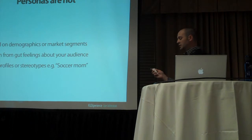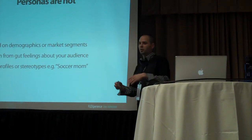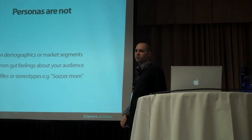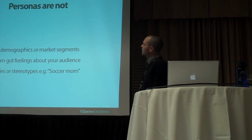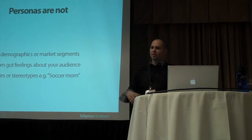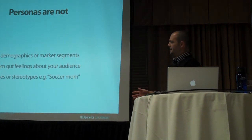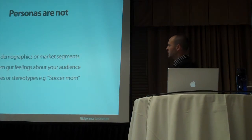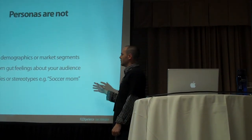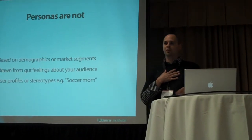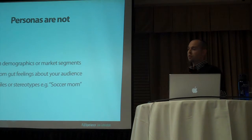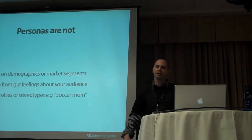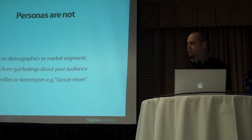The one thing that gets kind of confusing is when people start creating personas — especially those involved in the agile process with user stories — is what they're not. They're not based purely on demographics or market segments. Demographics roll into the persona, but it's not just those. And the other thing they're not is they're not drawn from just what I think this persona should be — it's based on the research. So you want to try to remove yourself from that, and get away from stereotypes, because you want to make it as believable as possible.